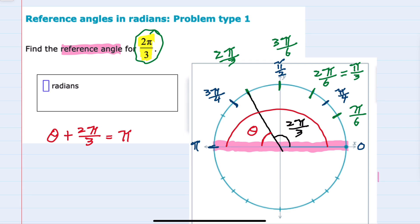From here I can solve for theta by subtracting the 2π/3 over. So theta equals π minus 2π/3. To get a common denominator, π would be 3π/3 minus 2π/3,